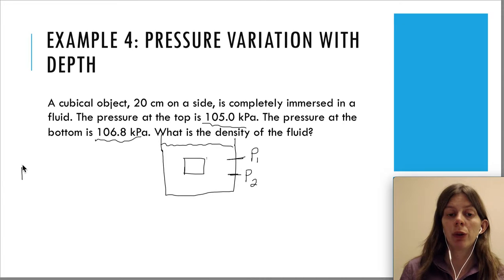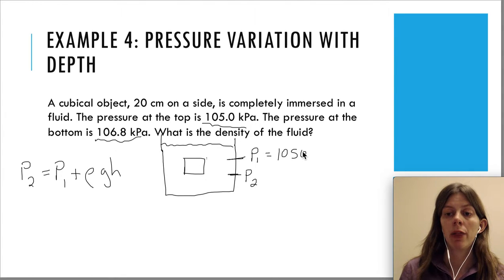So we're going to write down our equation for how pressure varies with depth, P2 equals P1 plus rho g h. We're going to make sure we have defined everything. P1 was 105,000 pascals. Kilo is 1000. P2 is 106,800 pascals.